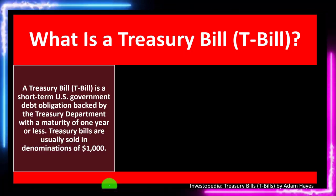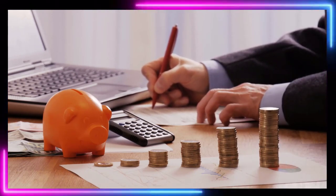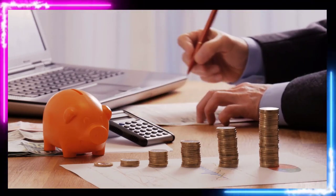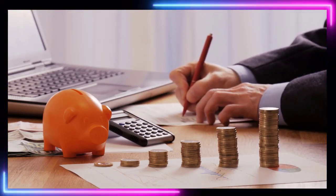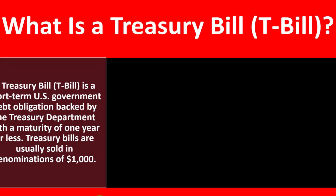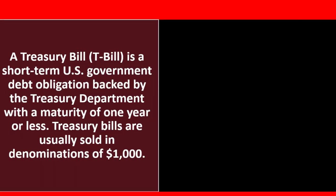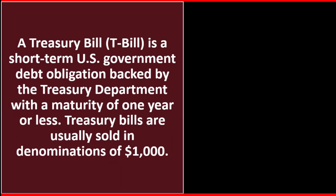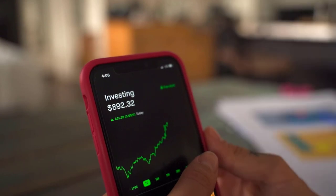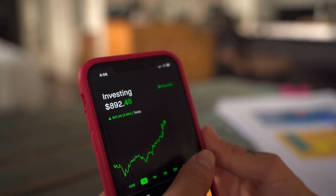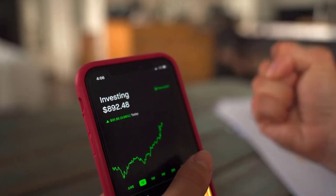In prior presentations, we've been taking a look at investment goals, investment strategies, and investment tools, keeping those items in mind. We're now considering what is a Treasury Bill, T-Bill. A Treasury Bill is a short-term U.S. government debt obligation backed by the Treasury Department — in essence, the government — with a maturity of one year or less. It's a short-term investment, backed by the government, therefore very secure.